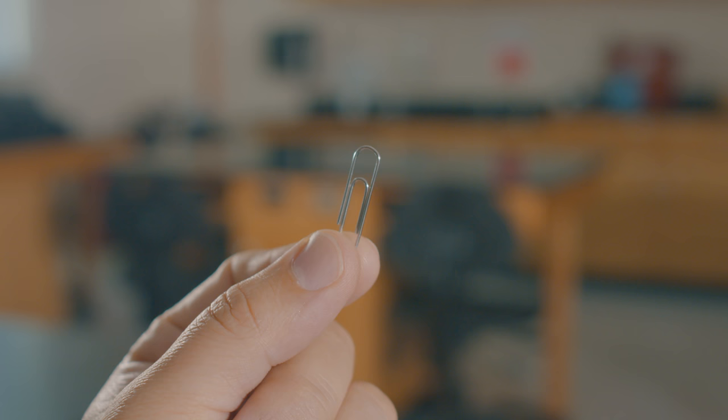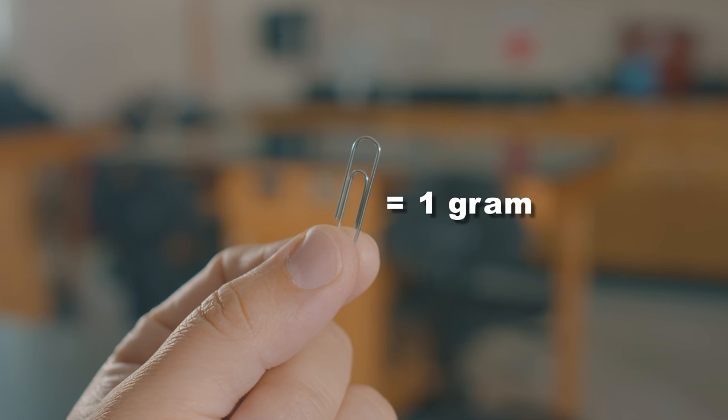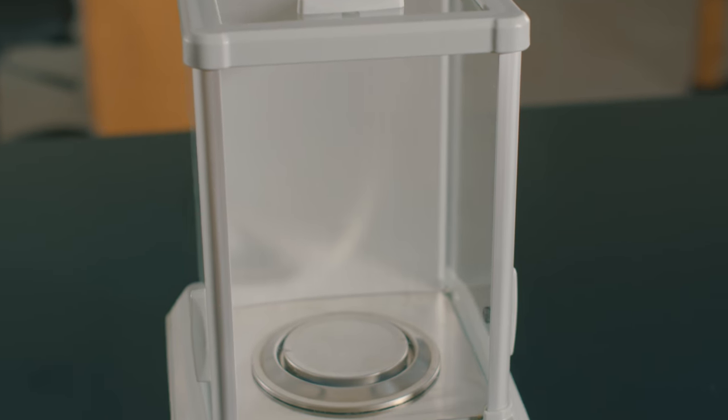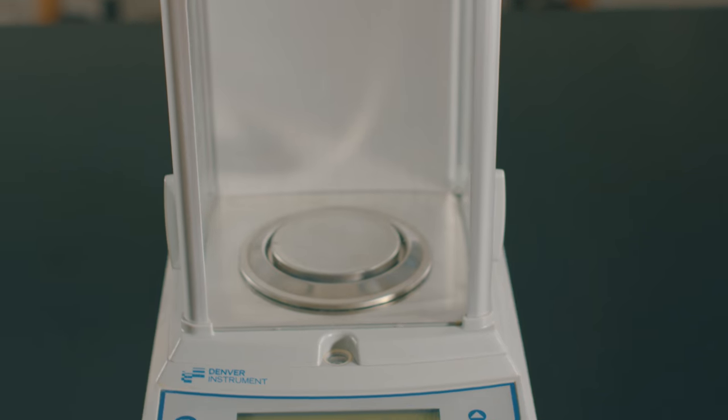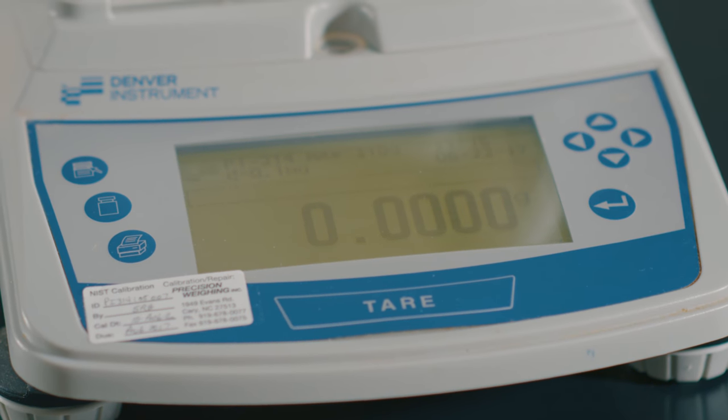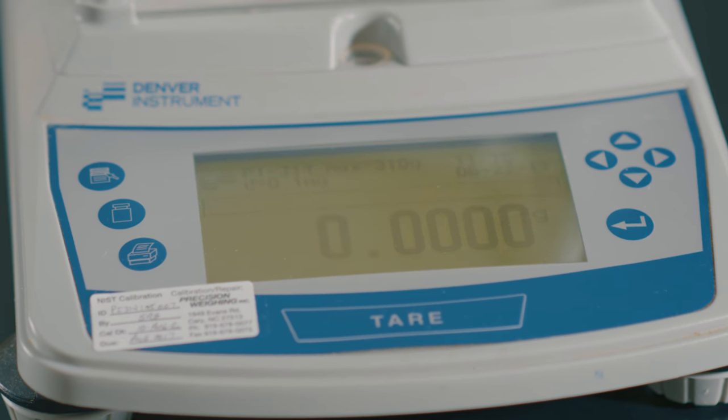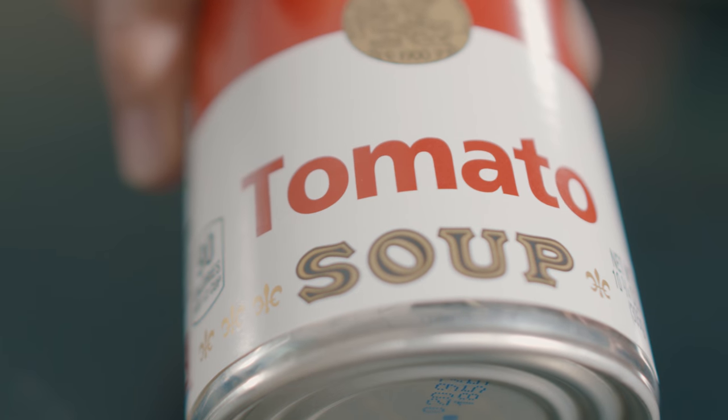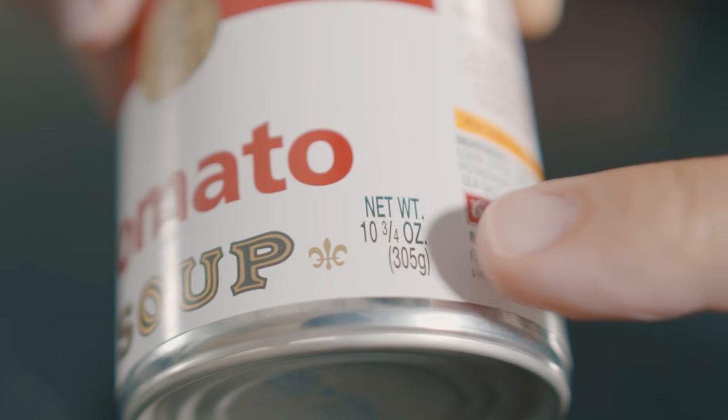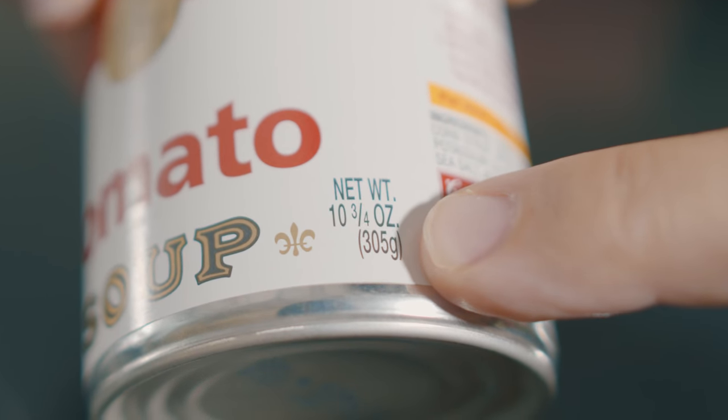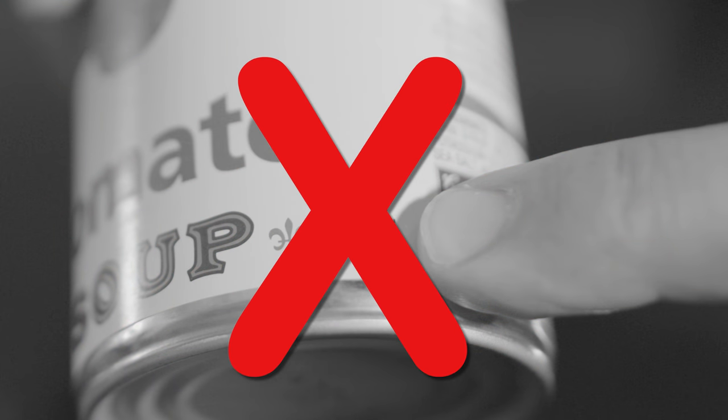Keep in mind that a small paper clip weighs about one gram. In other words, the analytical balance isn't designed for weighing heavy items. For example, this balance has a maximum weight of 310 grams. That's about the same weight as a can of tomato soup. Weighing anything larger than that will cause damage.